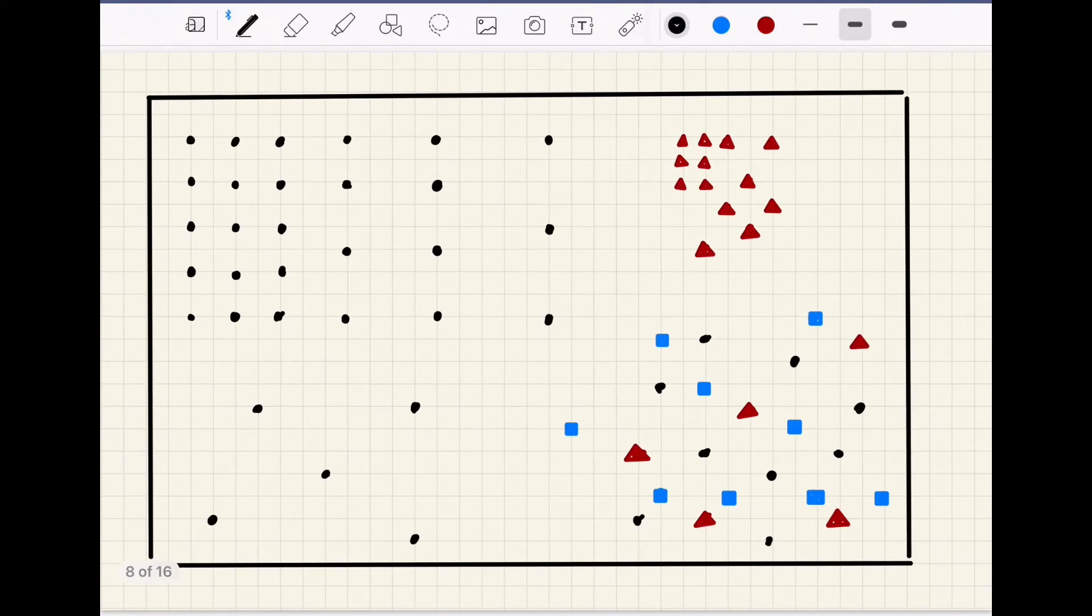This is true of sampling anything with a physical distribution across space. To help visualize this, we can look at this rectangle with a distribution of three shapes: black dots, red triangles, and blue squares.